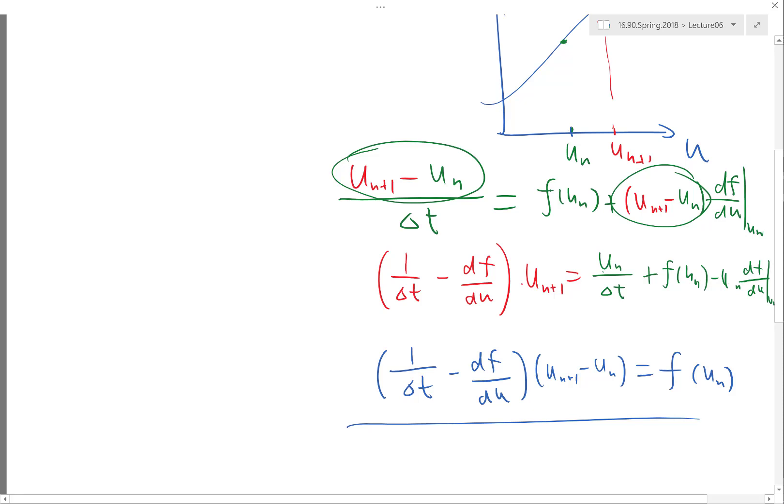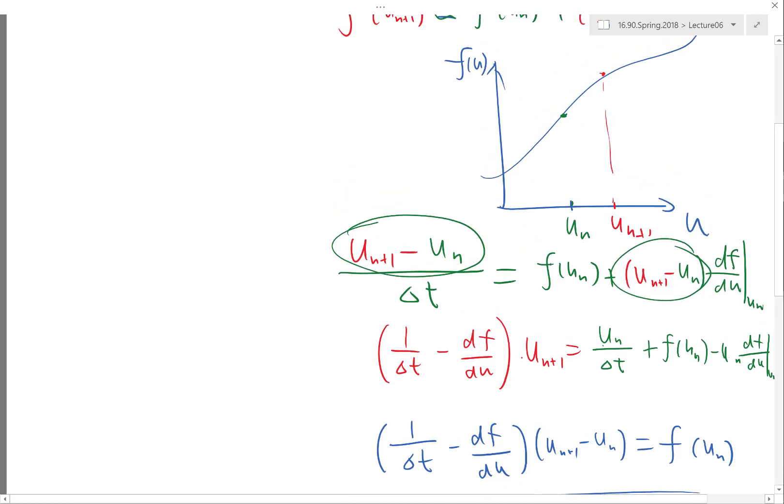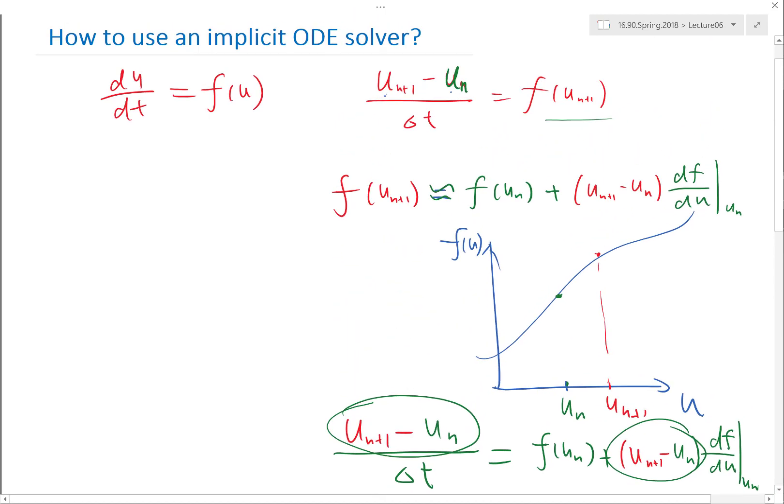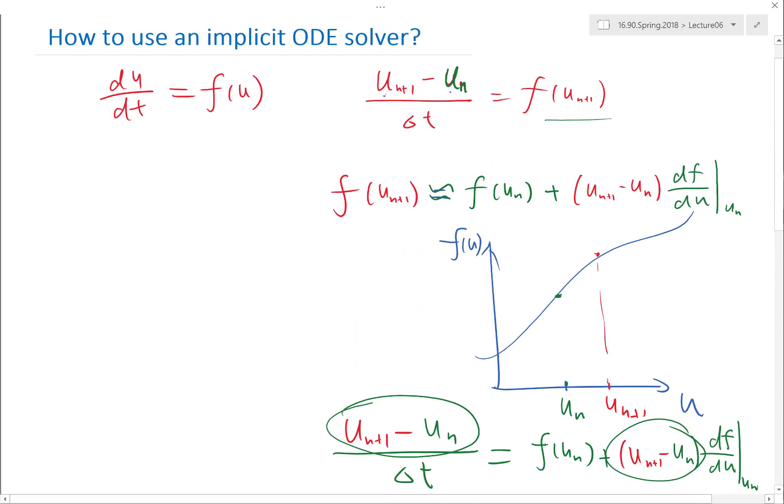So, what if after you solve this equation, you'll find, oops, u_n+1 minus u_n is actually not that small. What would you do? Or, a better way to check it is actually, now you computed u_n+1, right, by solving this equation. You can just plug back into this equation to see how these two sides are not satisfied. I mean, if it's pretty good, you are pretty happy. Otherwise, you need to do something else.